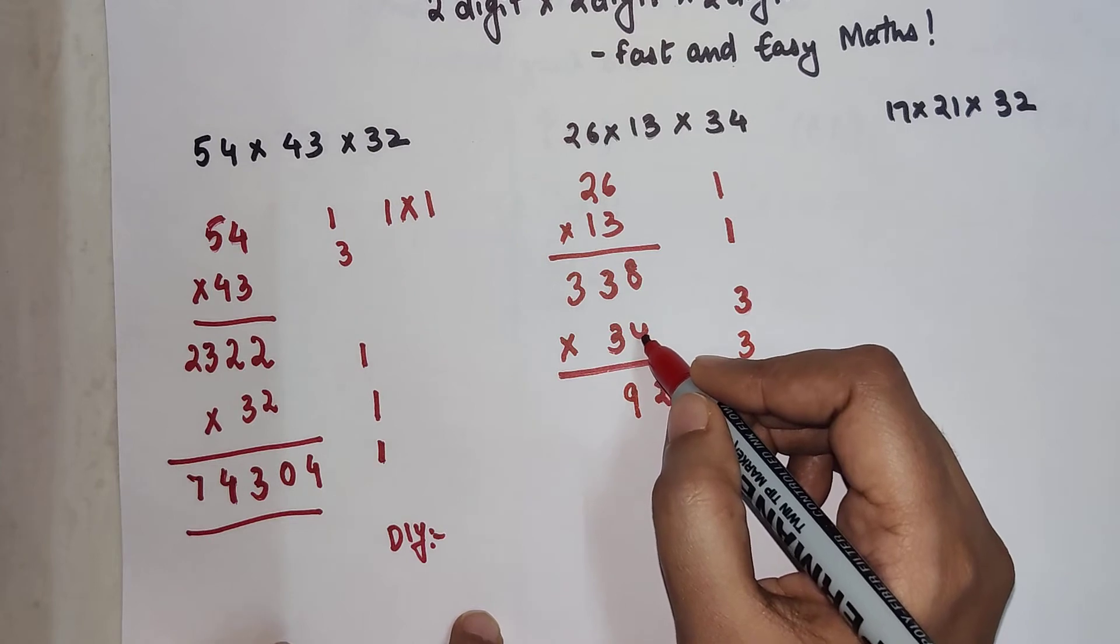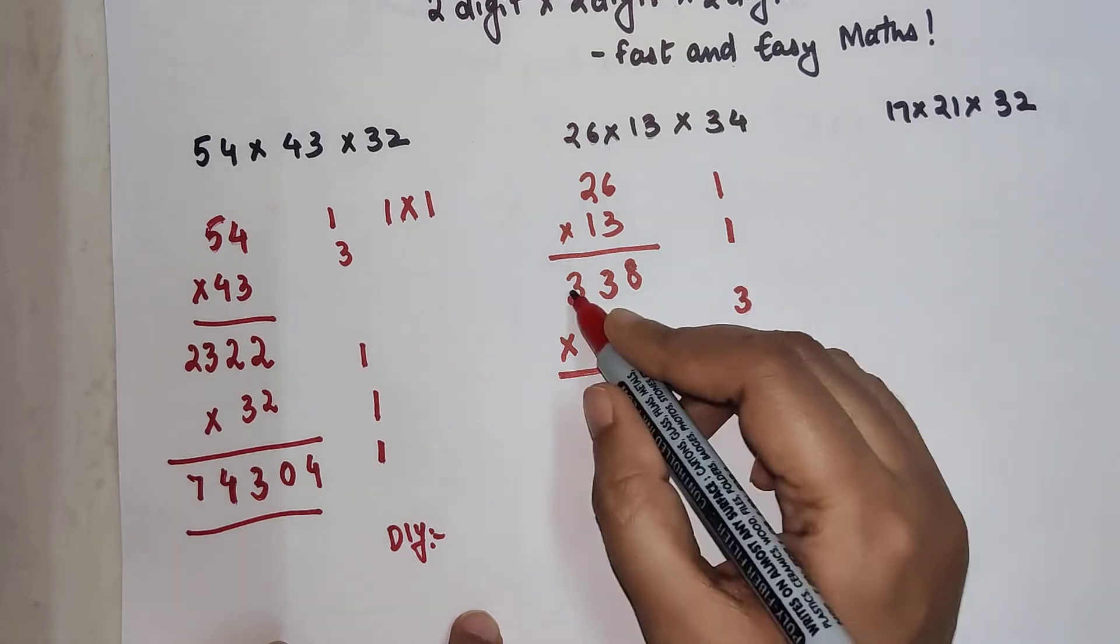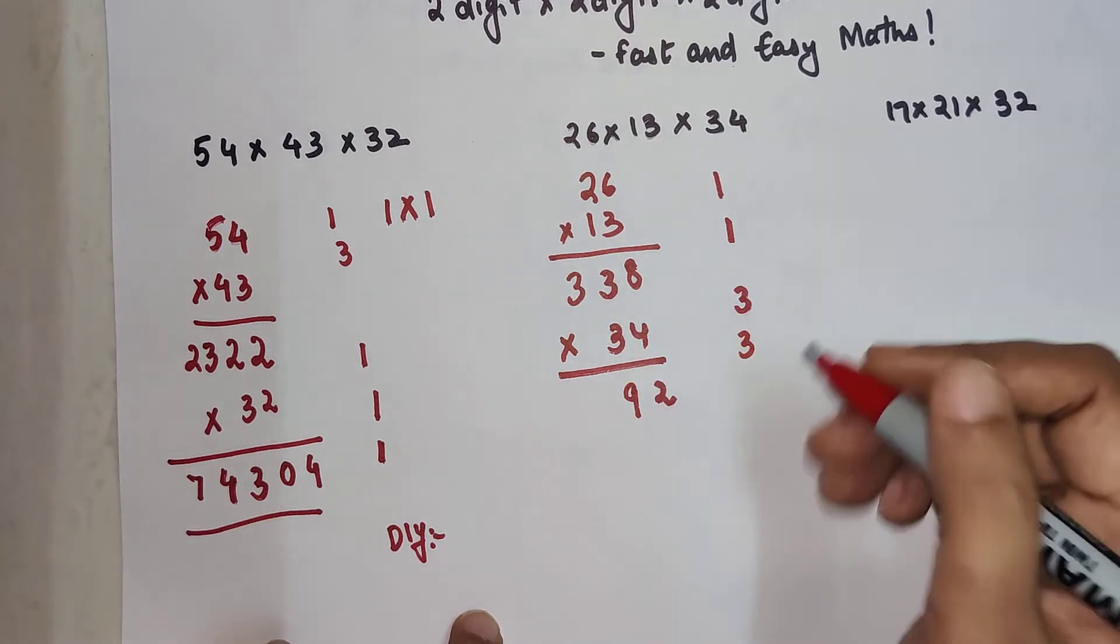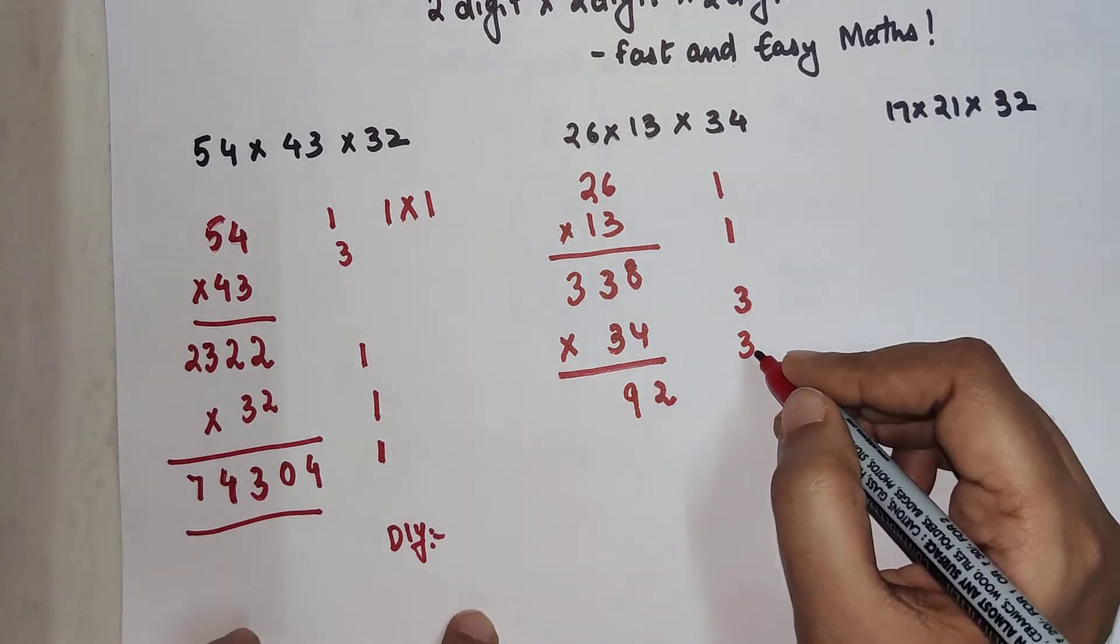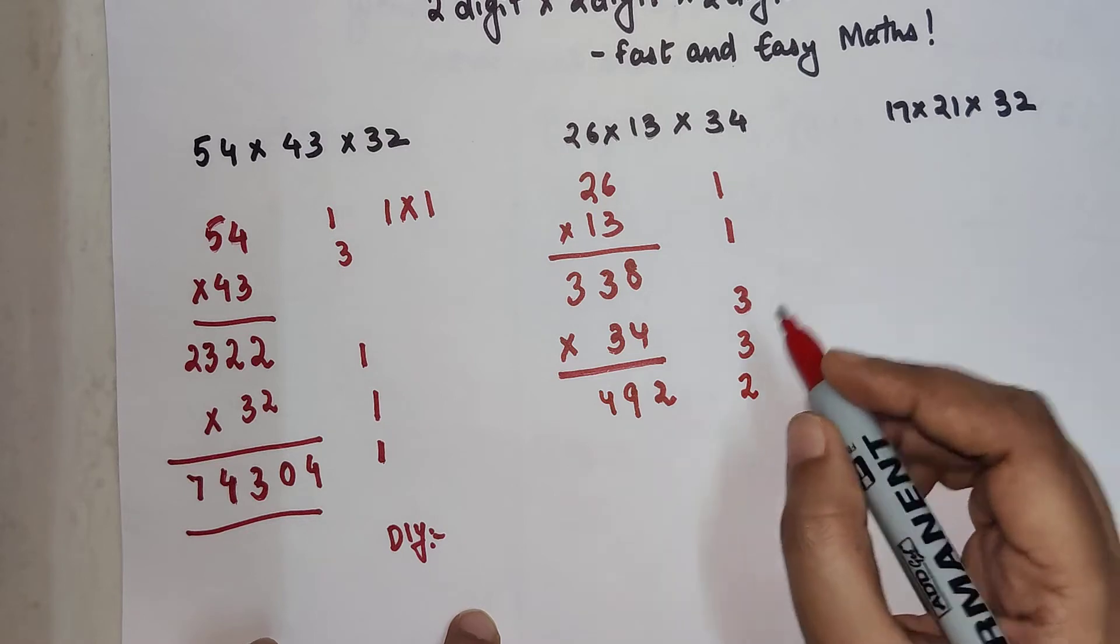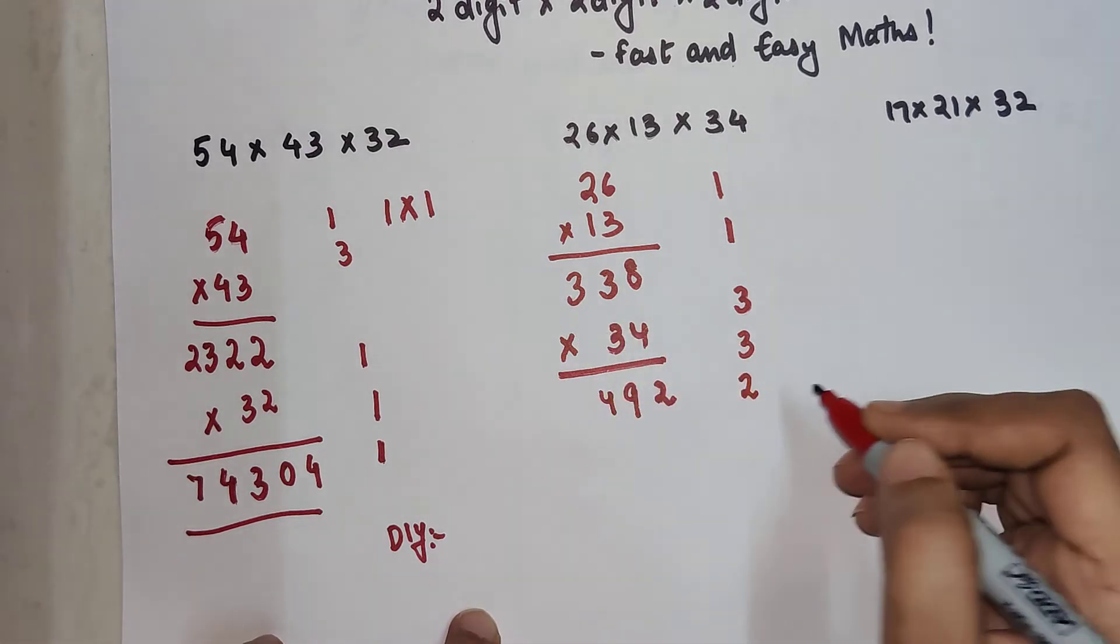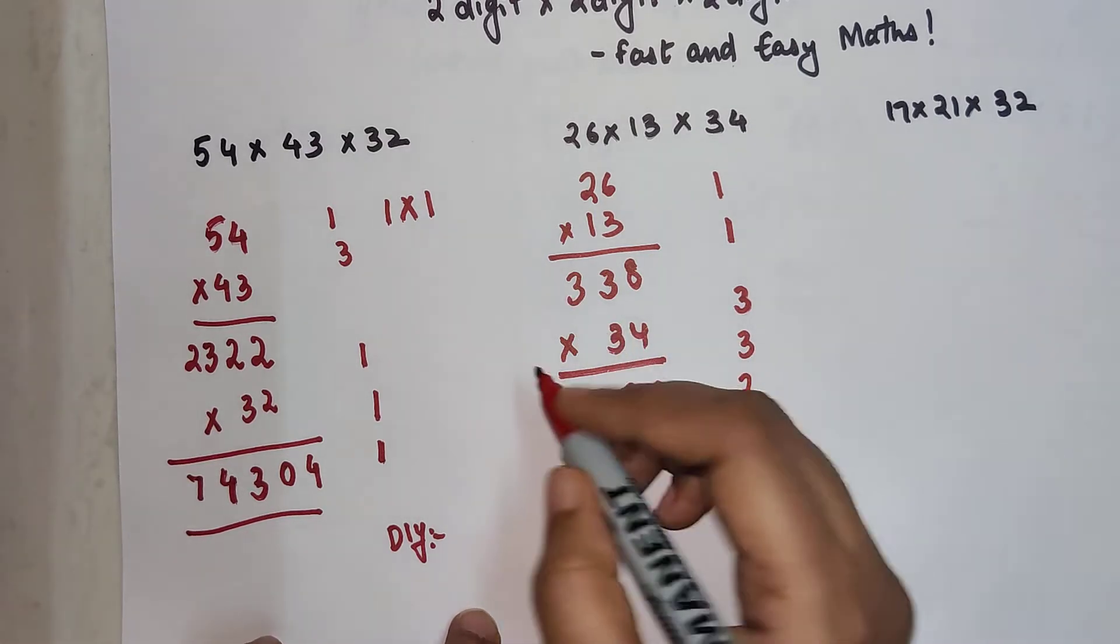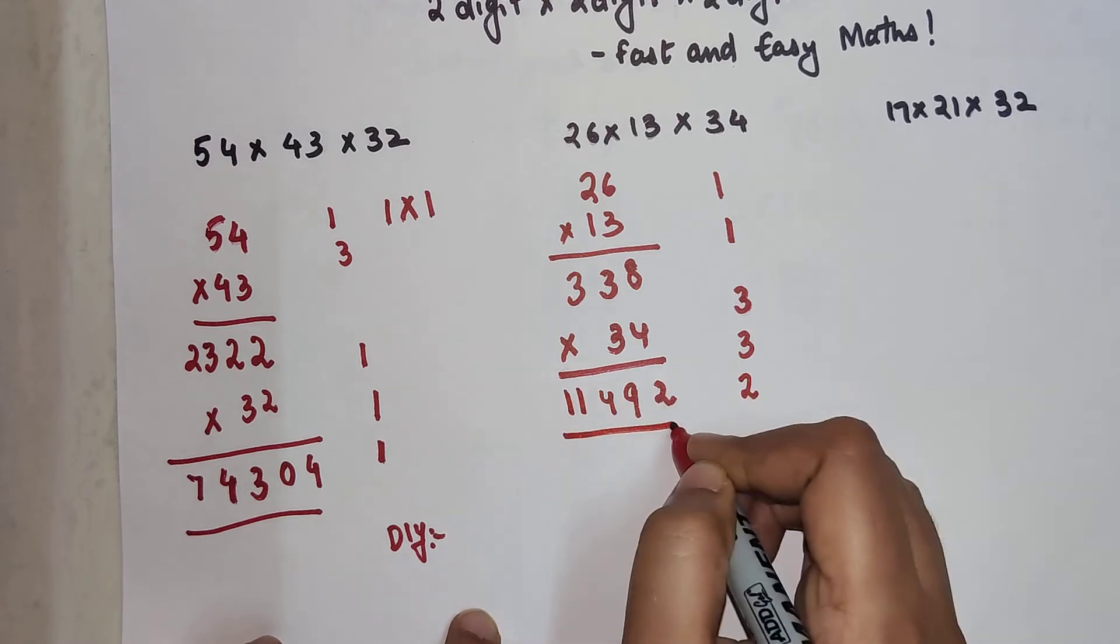Then we have again 12 plus 9. So 12 plus 9 is 21 plus 3 gets you 4, 24 and 2 carry.